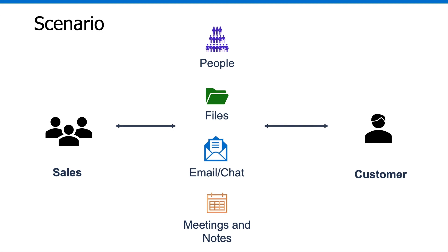You've also proposed integrating information about the sales organization into the app, so that it's easier for a salesperson to find other people within the organization to help out as customer calls and customer questions come up. To integrate this type of data into your app, you can use Microsoft Graph because it provides a single endpoint that the app can use to access this required data and simplify the overall development process.